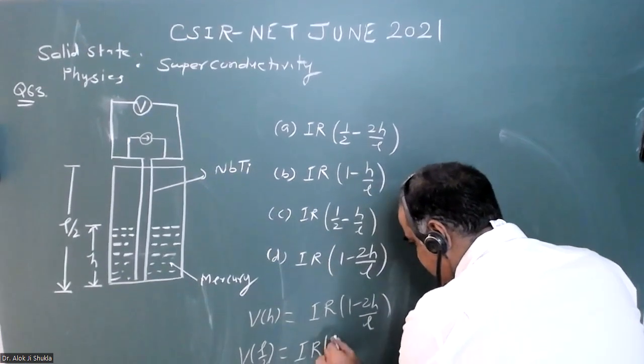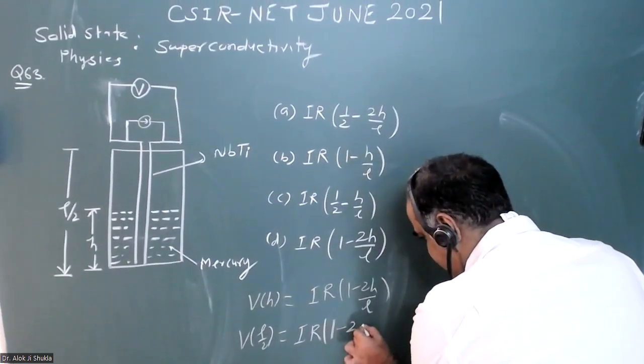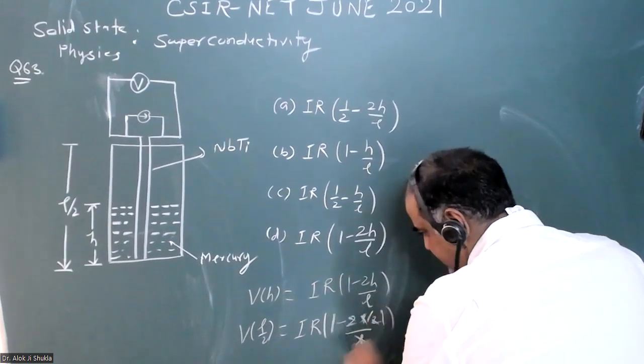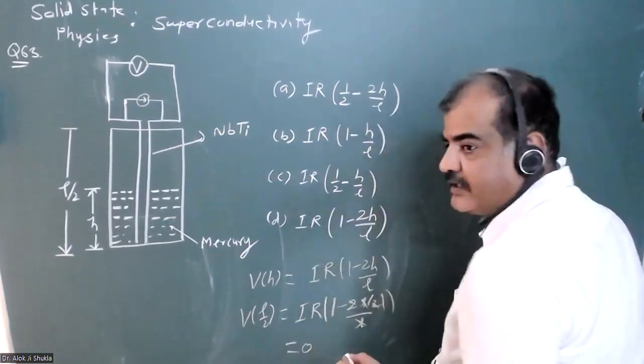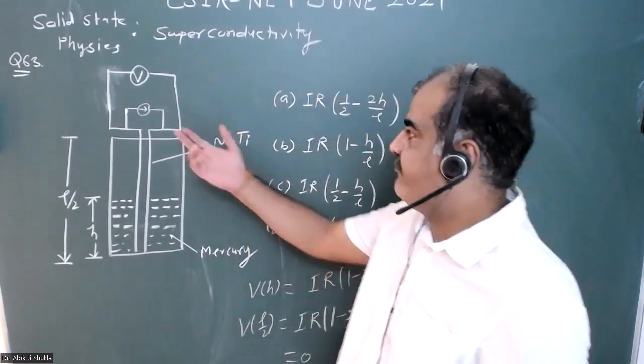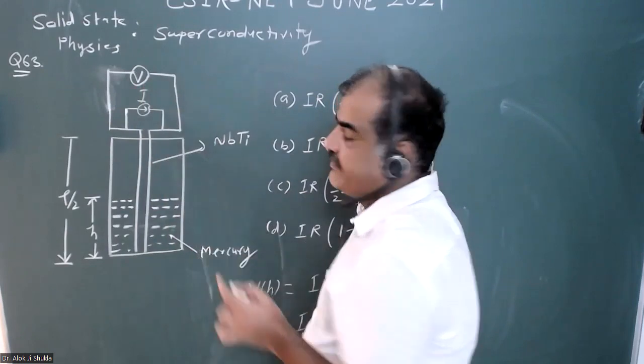If I put h = L/2, then this would be 1 minus L/2 upon L. I will cancel this, which gives me zero. Similarly in the normal state, we are flowing current I in the wire.